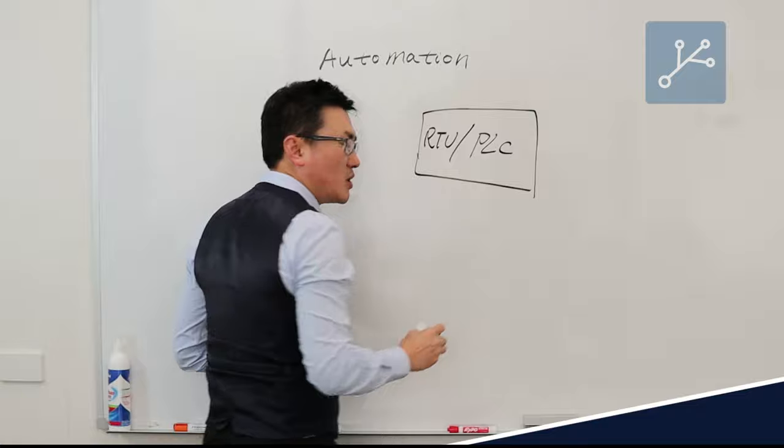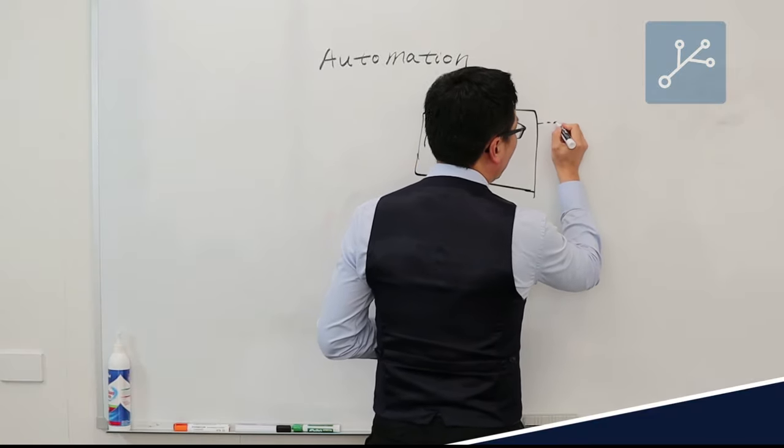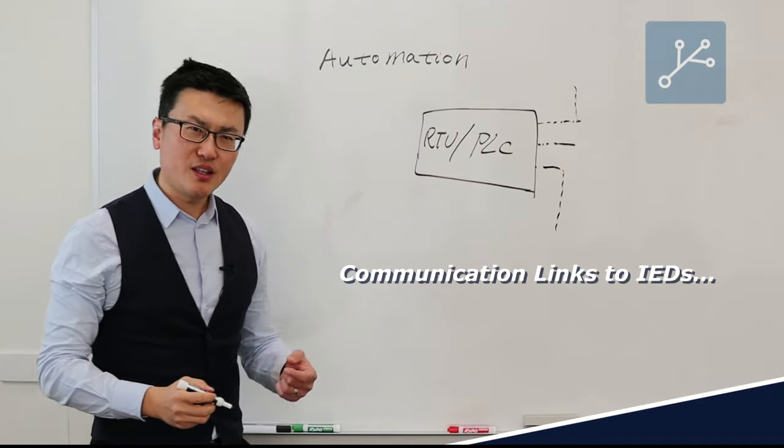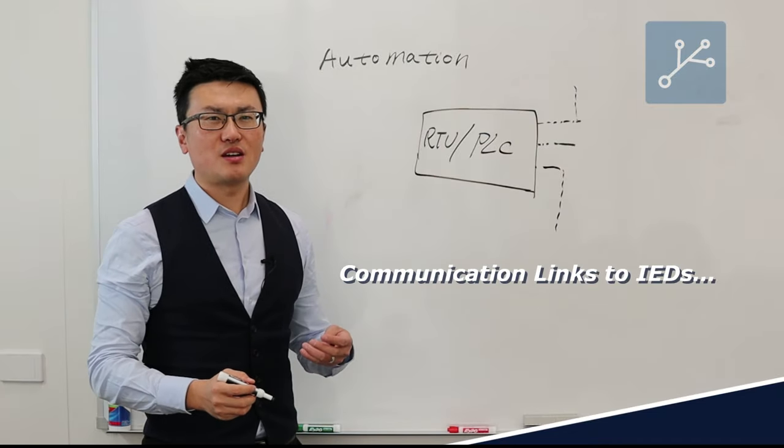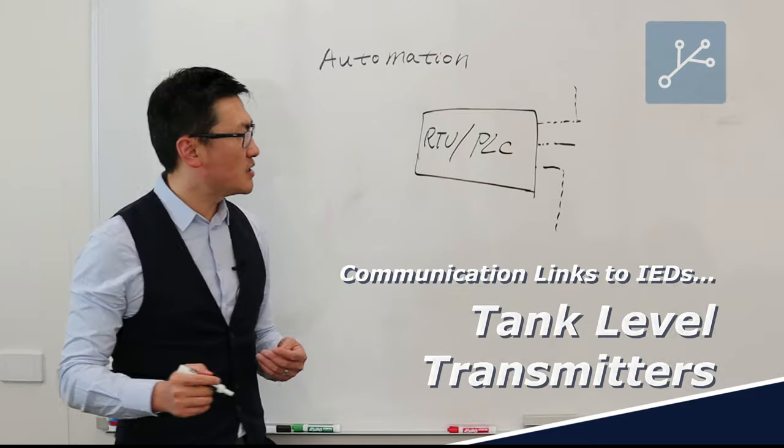An RTU would be also a component of a control system, and then a control system will have links to other IEDs such as a VSD, such as a flow meter, a pressure meter, and tank level transmitters.